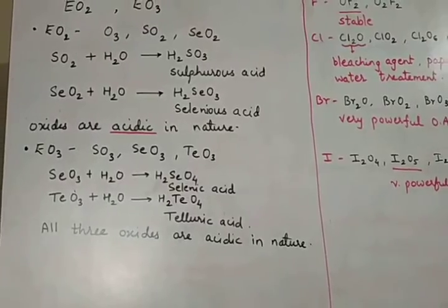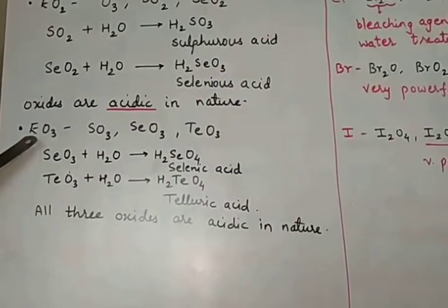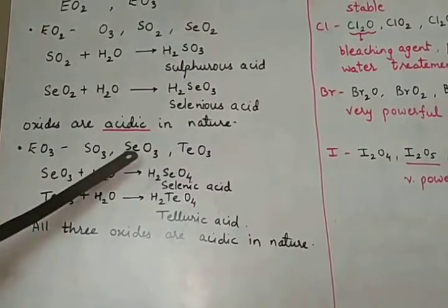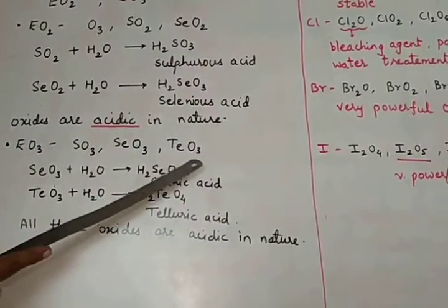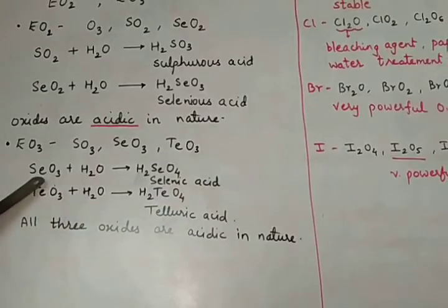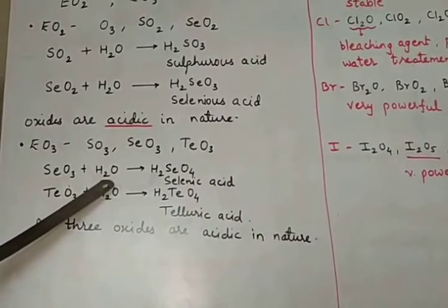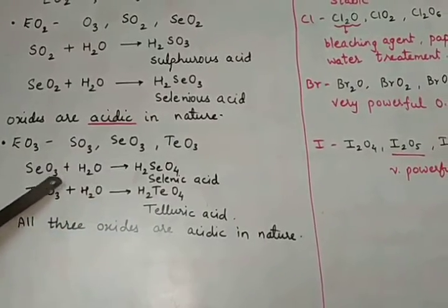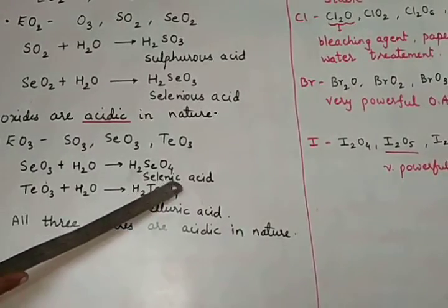The other type of oxide that is formed by group 16 elements is of the type EO3. So examples we have as SO3, SeO3, and TeO3. SeO3 combines with water to form H2SeO4, called selenic acid.